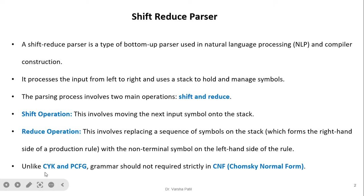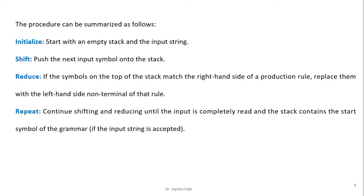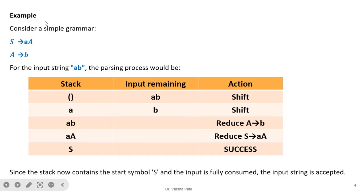These shift and reduce operations will become clear when we solve the example. Unlike CYK and PCFG, shift-reduce does not require the grammar to be in Chomsky Normal Form (CNF). The procedure can be summarized as: initialize with an empty stack and the input string; shift by pushing the next input symbol onto the stack; reduce by replacing matching right-hand side symbols with the left-hand side non-terminal; continue until the input is fully read and the stack contains the start symbol.